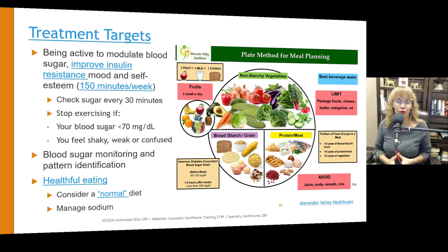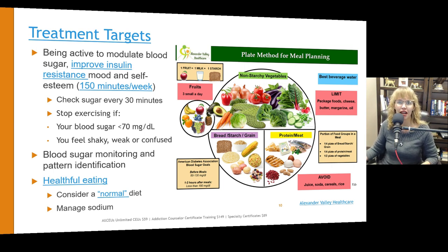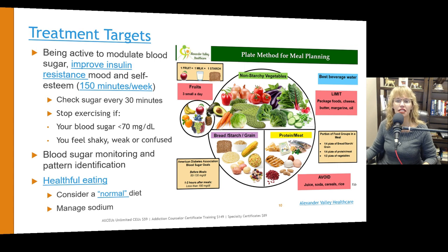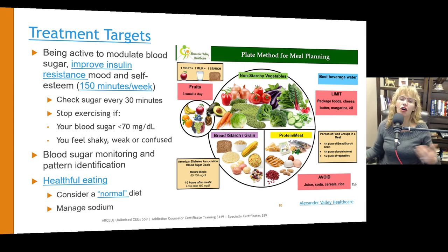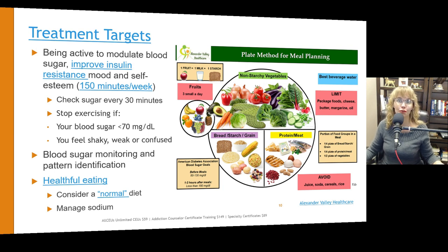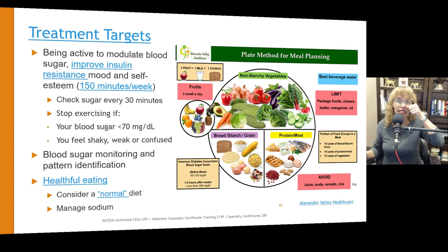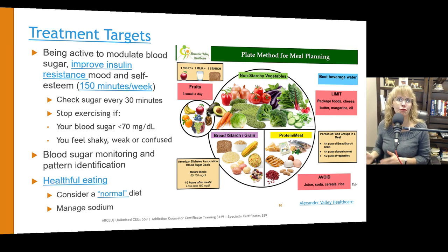Another area we can help with is blood sugar monitoring and pattern identification. People need to pay attention to what causes their blood sugar to spike — not just food, but also stress, certain medications, or illness that may contribute to alterations in blood sugar. It's important for them to be curious, to be detectives, and learn for their body what affects their blood sugar.